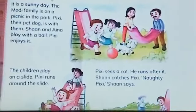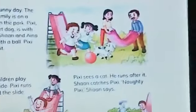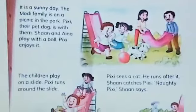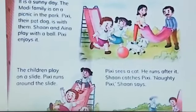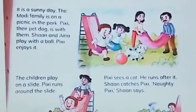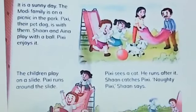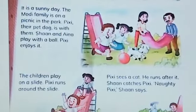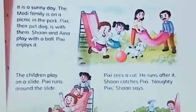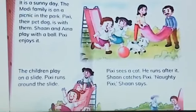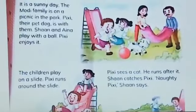It is a sunny day — sunny day means a hot day. Modi family — Modi family picnic ke liye park jaate hain. Pixie, their pet dog — Pixie chun ka pet dog tha, voh bhi unke saath jaata hai. Shan and Ina — the name of the boy is Shan and the name of the girl is Ina. Shan and Ina play with the ball — ball se khilte hain. Pixie enjoys it.